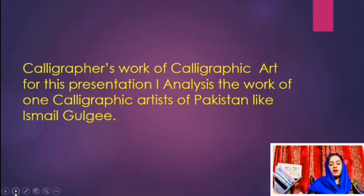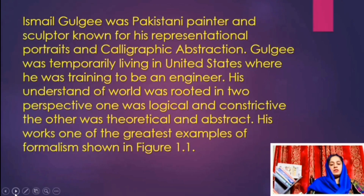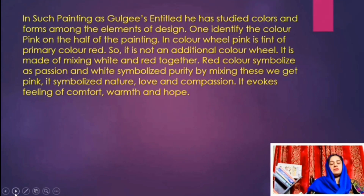The calligraphic art for this presentation focuses on analysis of the calligraphy of Ismail Gulgee. Looking at the picture, this work is made by Ismail Gulgee and his name is written on the canvas. Gulgee was a Pakistani painter and sculptor known for his representational portraits and calligraphic abstraction. He was living in the United States where he had trained to be an engineer. His understanding of the world was rooted in two perspectives: one logical and constructive, the other theoretical and abstract. His work is one of the greatest examples of formalism. In this painting, he studied colors and forms among the elements of design.